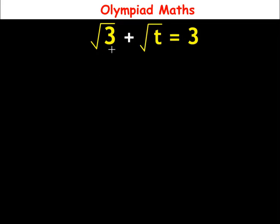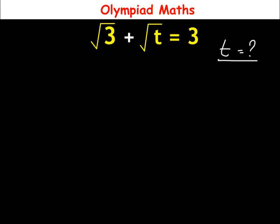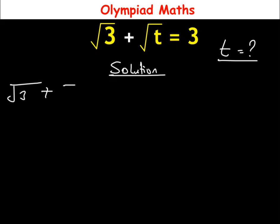Hello. How to solve √3 + √t = 3. Here, how to solve for all the values of t that satisfy this given equation. So t is equal to question mark. Solution: the question is √3 + √t = 3.